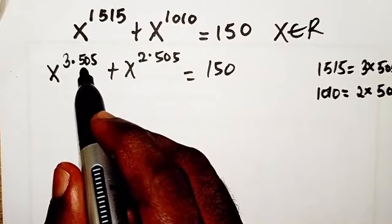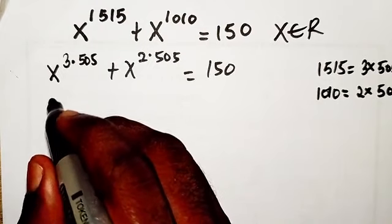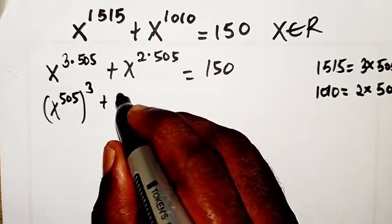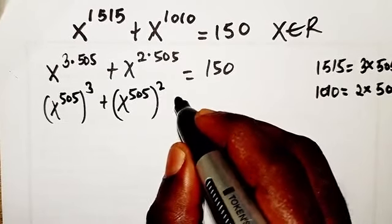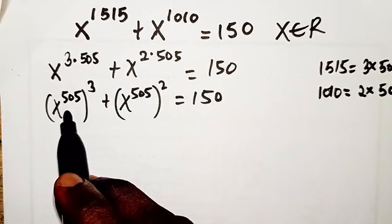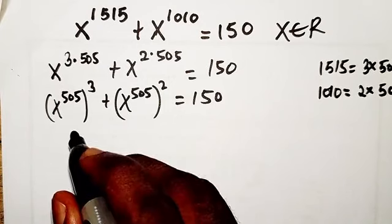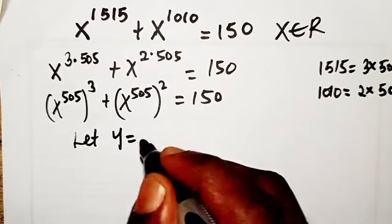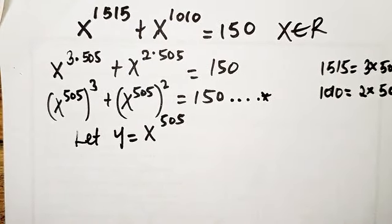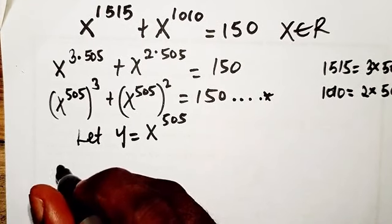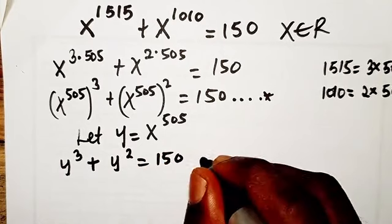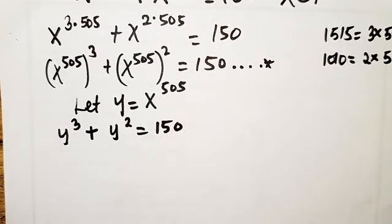We can see that 505 appears in both exponents, so we factor it out and write the equation as (x^505)^3 plus (x^505)^2 equals 150. Now let's substitute y equals x to the power 505. Wherever we see x^505, we replace it with y, giving us y cubed plus y squared equals 150.